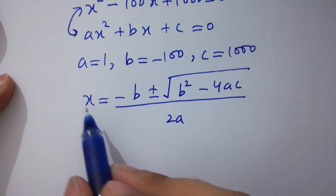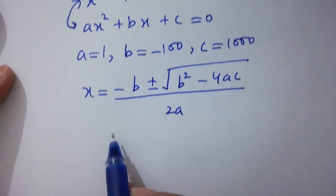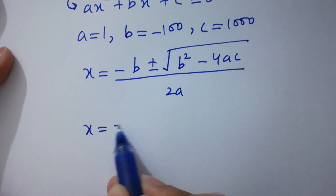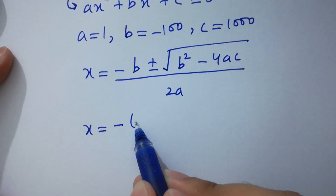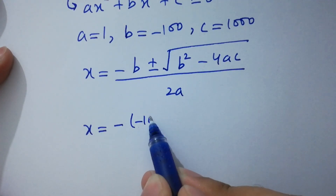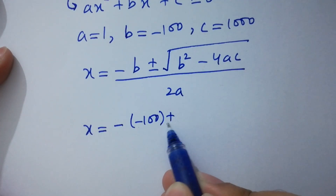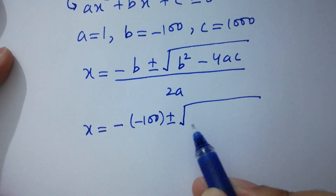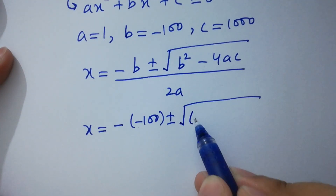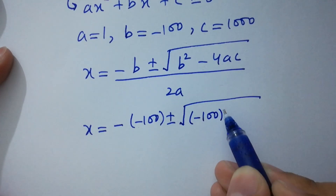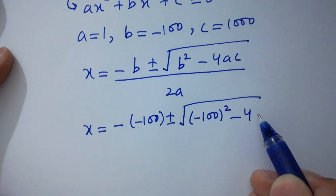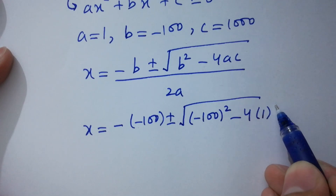Put the values of a, b, and c. By comparing, a equals 1, b equals minus 100, and c equals 1000. So x equals minus (minus 100) plus or minus square root of (minus 100) squared minus 4 times 1 times 1000, all over 2 times 1.